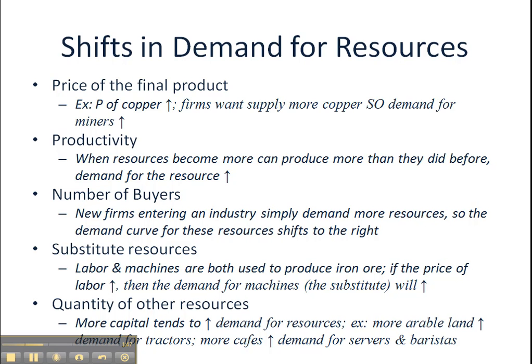Number of buyers — when new firms enter into an industry, they of course require resources, so the demand curve for resources will shift out to the right. For instance, when Walmart builds a store in a small town, it has to hire workers and acquire land, capital, buildings, and other supplies. So the demand curve for all of these resources is going to shift out to the right.